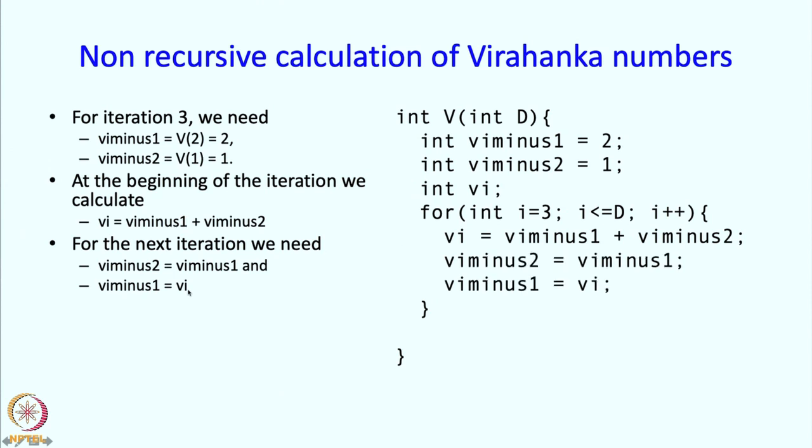So our loop must be this. And finally what should we return? At the end of this loop, Vi will contain Vd, and therefore we should return Vi over here.